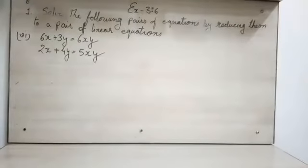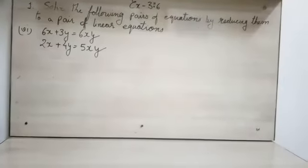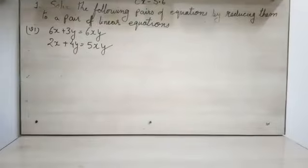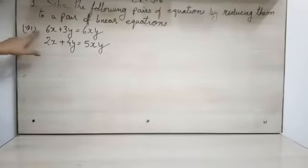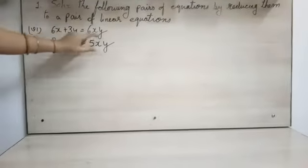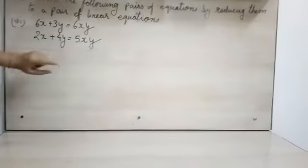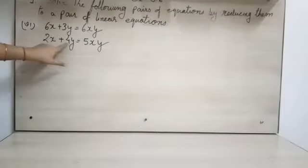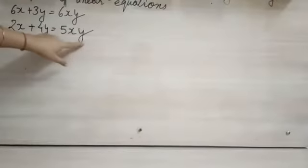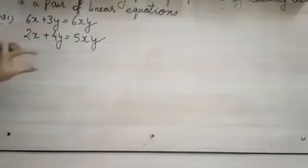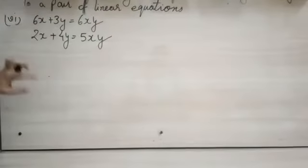Students, in this question they are telling us 6x plus 3y is equal to 6xy, and again 2x plus 4y is equal to 5xy. Our first objective is to remove this xy, so what we will do?